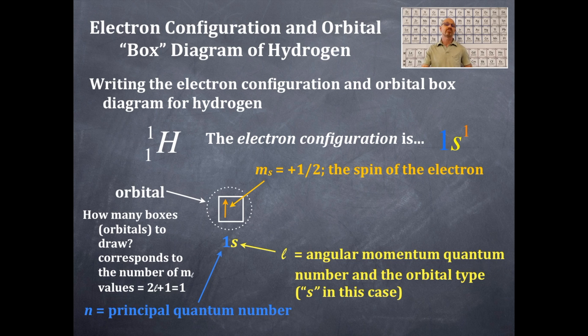You always write, by convention, the first arrow in a box in an orbital, the first arrow is always up. By convention. So the first arrow, the first electron, the first spin of that electron in the first box is always an upward facing electron.